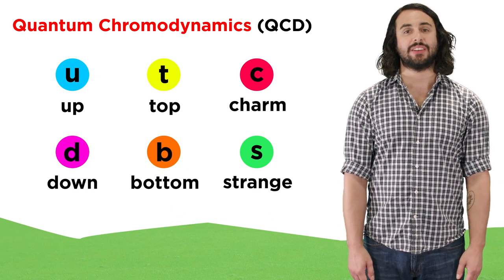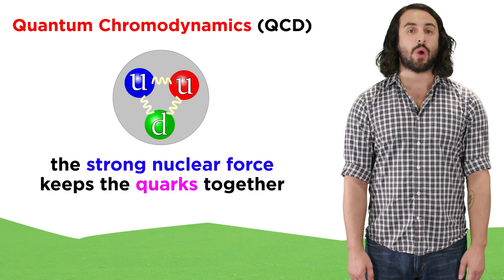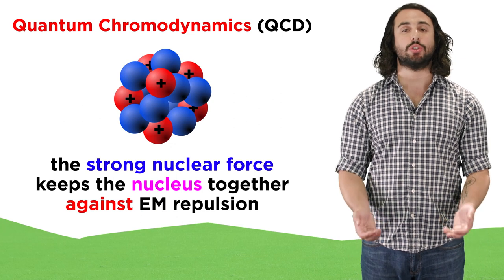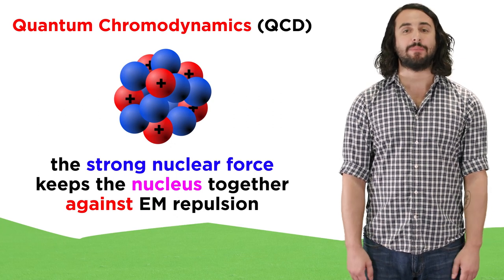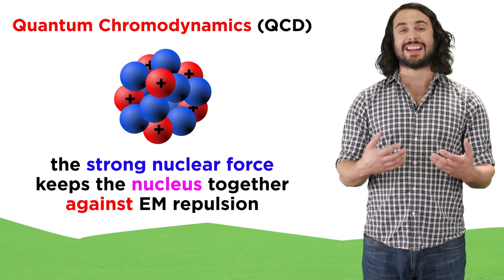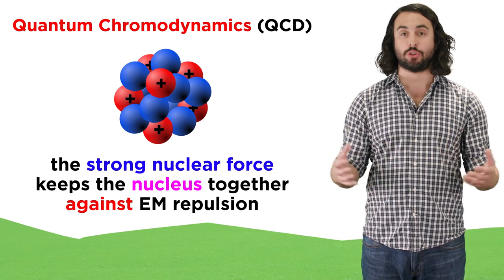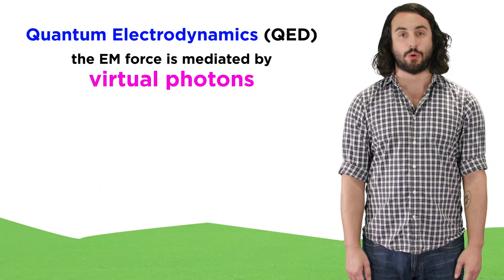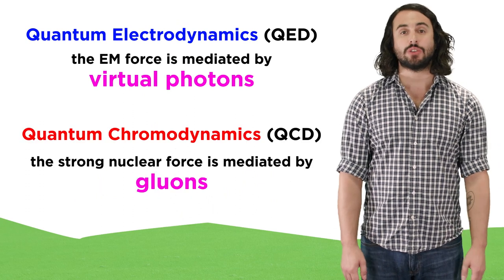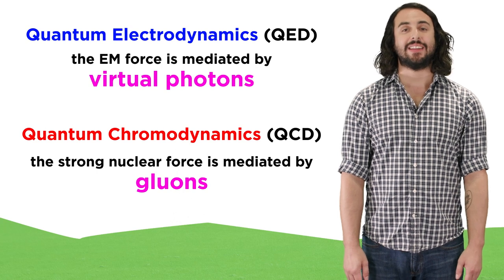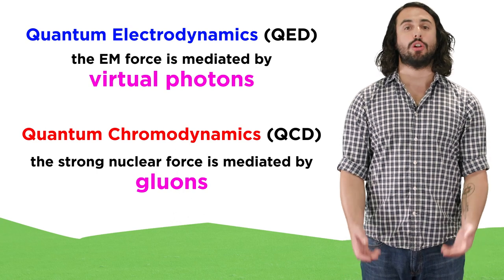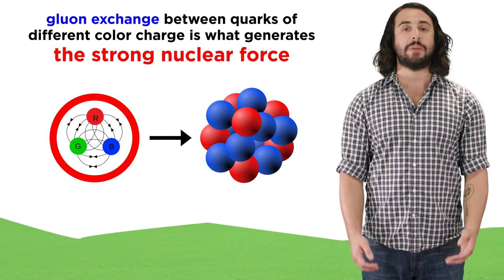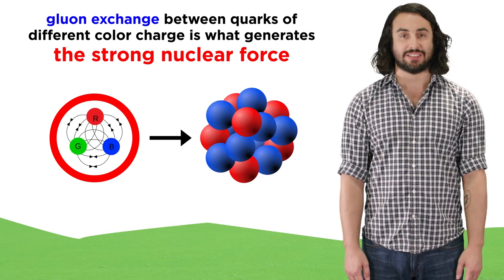We must understand that the attractive force between quarks is what keeps the particles of the nucleus together. It is the strong nuclear force, capable of keeping positively charged protons together against their electromagnetic repulsion. And just like QED did for the electromagnetic force, QCD shows that the strong nuclear force is mediated by the exchange of quanta called gluons. It is the exchange of these gluons, which come in eight varieties, that keeps an atomic nucleus stable.